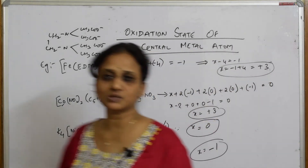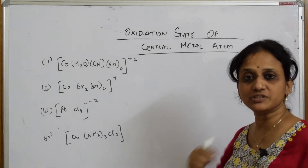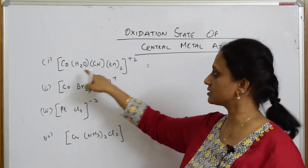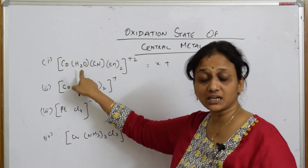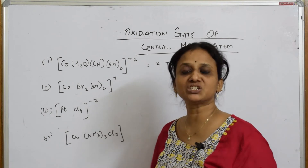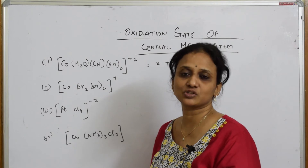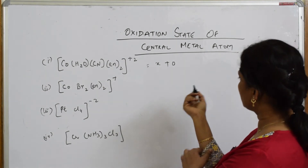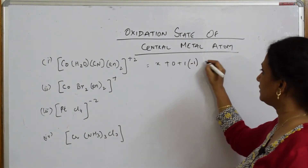Let's look at more examples for calculating oxidation state. For a cobalt complex with multiple ligands: water is a neutral ligand (charge 0), and cyano (CN⁻) has only 1 group with charge minus 1, so 1 × (−1).